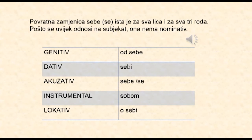Povratna zamjenica sebe je ista za sva lica i za sva tri roda. Pošto se uvijek odnosi na subjekat, rekli smo da nema nominativ. U genitivu glasi: od sebe; dativ: sebi; akuzativ: vidim sebe ili vidim se; instrumental: sa sobom; lokativ: o sebi.